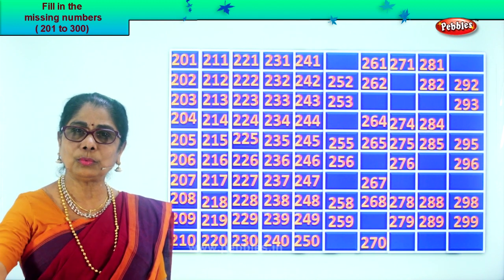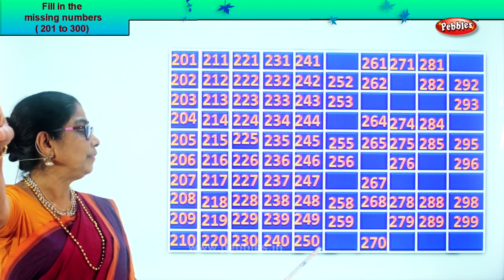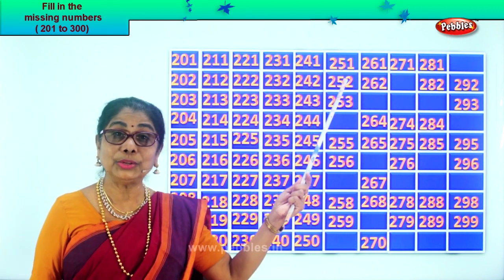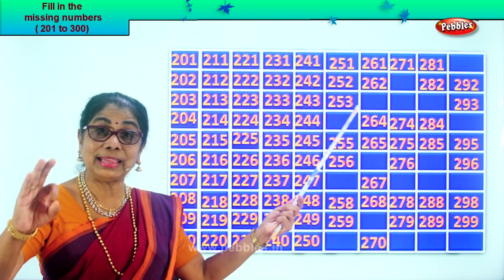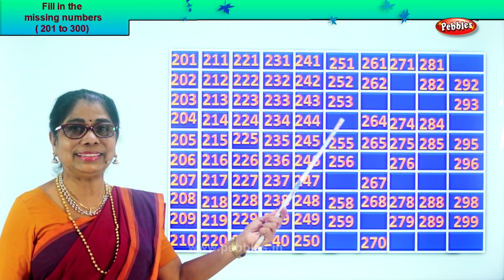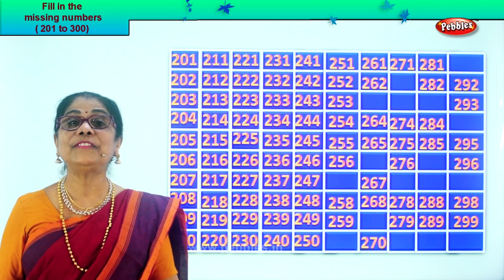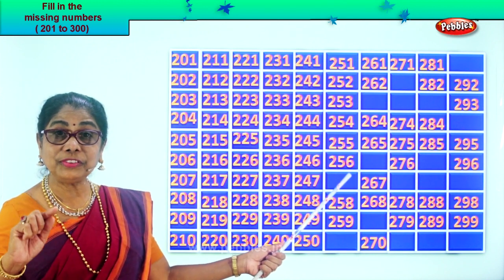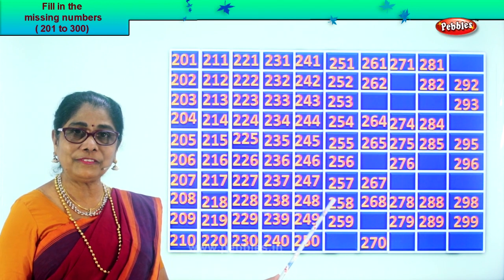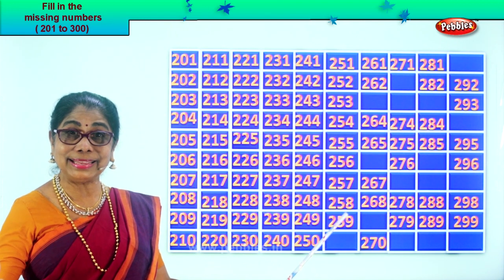After fifty — fifty-one. So two hundred and fifty-one. Two hundred and fifty-two. Two hundred and fifty-three. After fifty-three — fifty-four. Two hundred and fifty-four. Two hundred and fifty-five. Two hundred and fifty-six. After fifty-six — fifty-seven. So you write two hundred and fifty-seven. Two hundred and fifty-eight. Two hundred and fifty-nine. After fifty-nine — sixty. Two hundred and sixty.